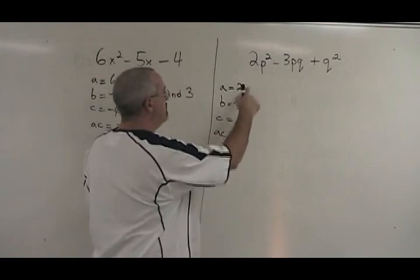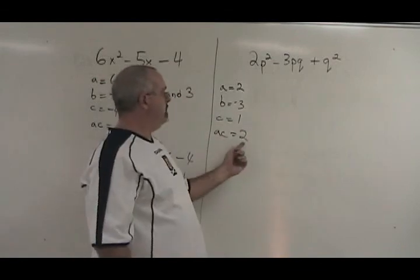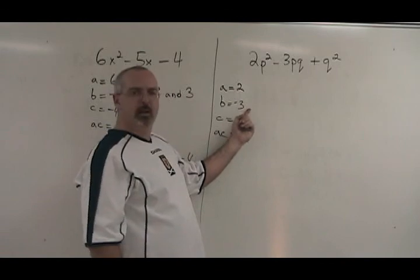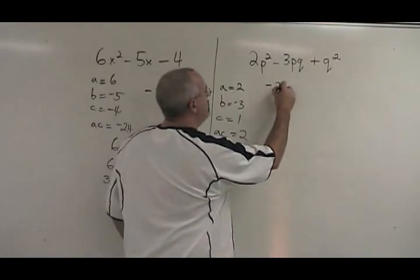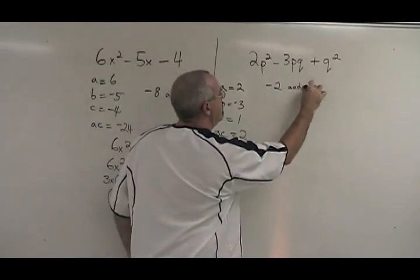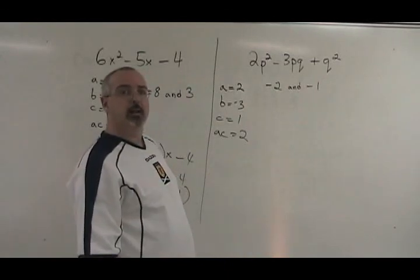AC is equal to 2 times 1, which is 2. What two numbers multiply to give a 2 but add to give a negative 3? Negative 2 and negative 1. Multiply to give a 2 and add to give a negative 3.